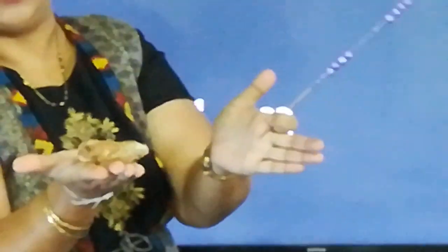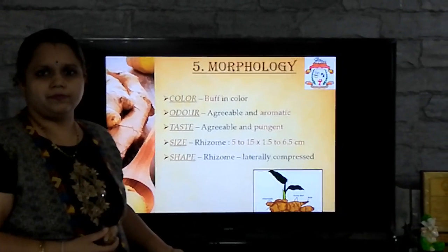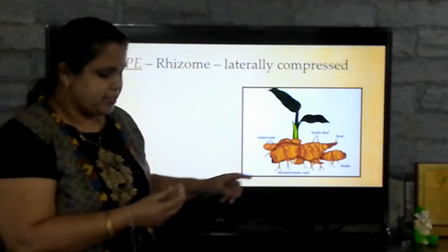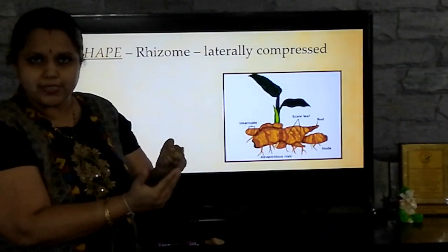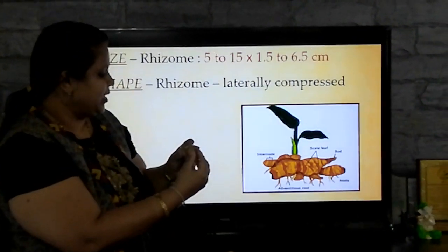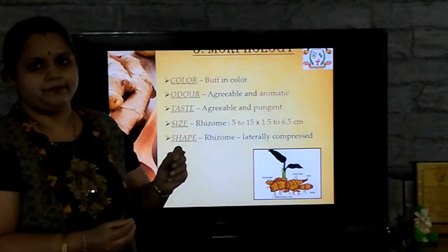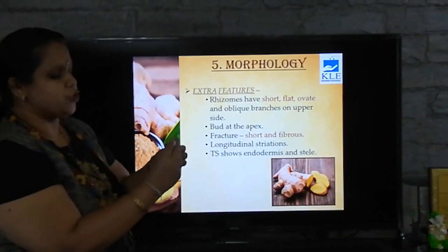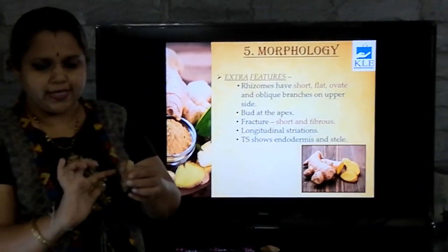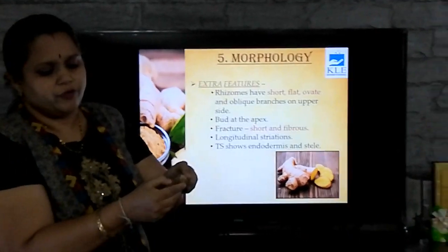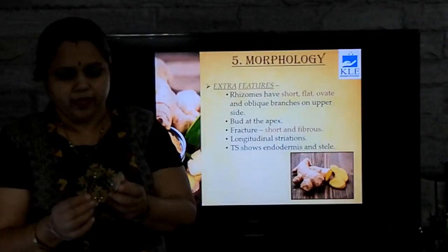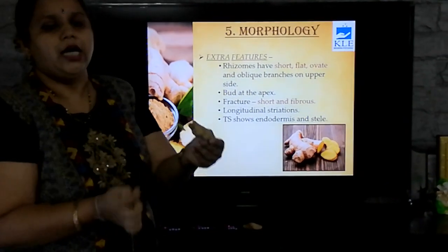Shape: these rhizomes are laterally compressed. For extra features, you can see the internodes — the space between nodes — the nodes themselves, scaly leaves, the bud at the apex, and some adventitious roots. These rhizomes have short, flat, ovate and oblique branches on the upper side. Fracture: if you break it, it is fibrous and short, so it easily breaks and you can see the protruding fibres — this is called fibrous fracture. You can also observe longitudinal striations, which are lines on the ginger.